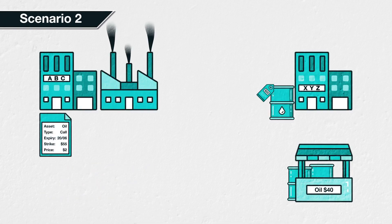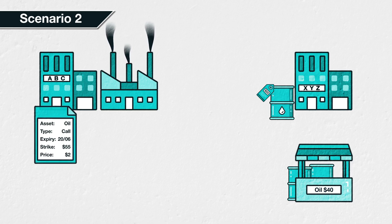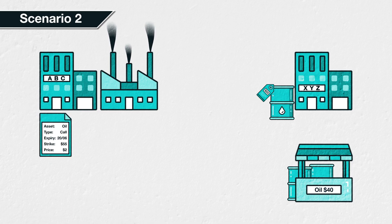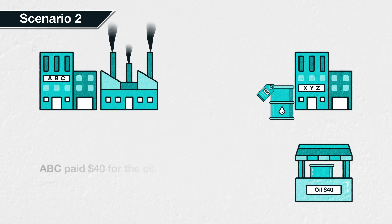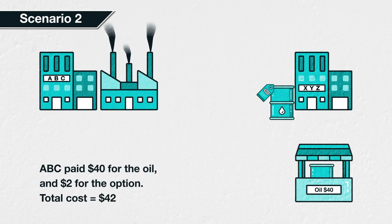Scenario 2: The price of oil remains unchanged at $40 per barrel on June 20th. ABC is now ready to purchase the oil. The call option gives them the option to buy at the strike price of $55, but because it's possible to purchase at $40 in the open market, there is no point using the option. ABC therefore purchases the oil at $40 per barrel in the open market. They also paid $2 per barrel for the call option, so their total cost is $42 — still well below the $60 threshold. ABC's project is still profitable.